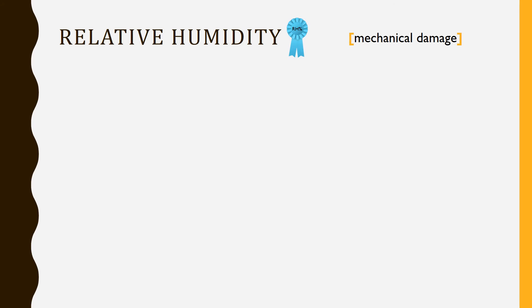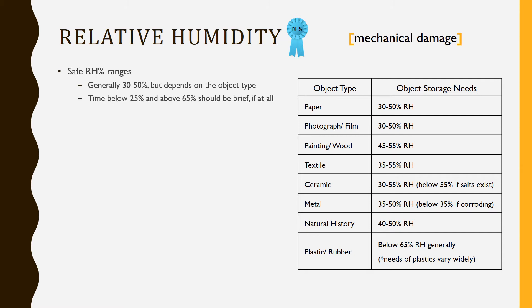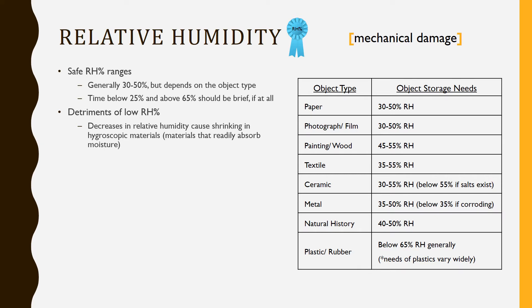Let's switch over to relative humidity. Just like with temperature, each object type has its preferred relative humidity range. Safe relative humidity is generally between 30 to 50%, but it does depend on the object type. Time below 25% and above 65% should be brief if it does happen, since they are fairly low and high values. Low relative humidity causes shrinking in hygroscopic materials like wood and paper and can cause these items to become brittle and crack.